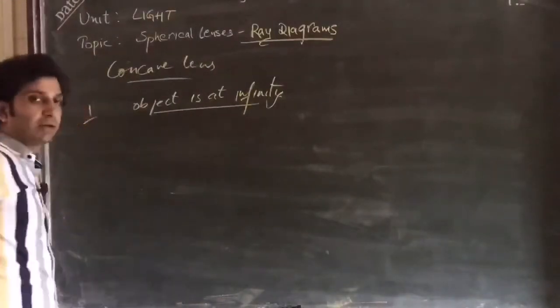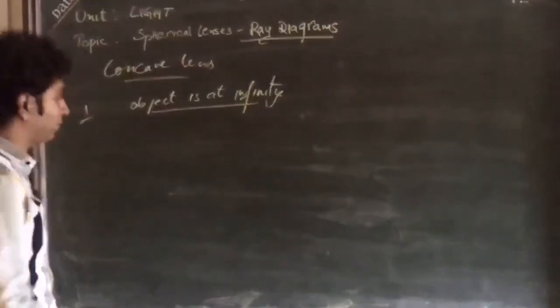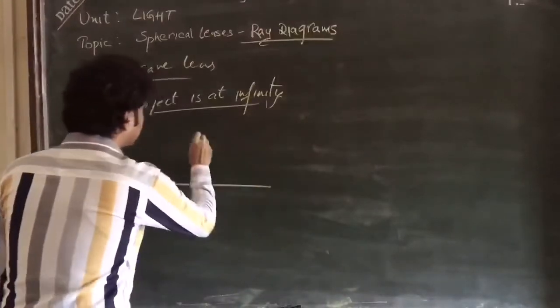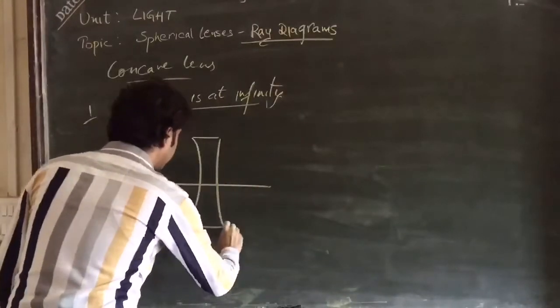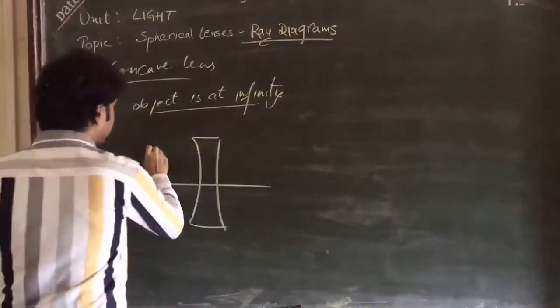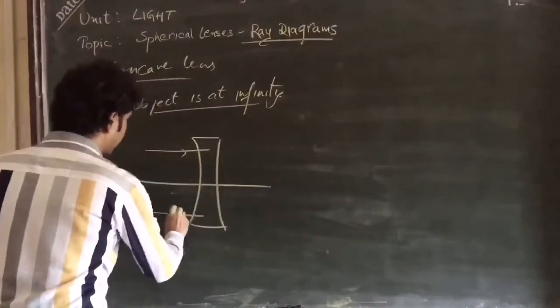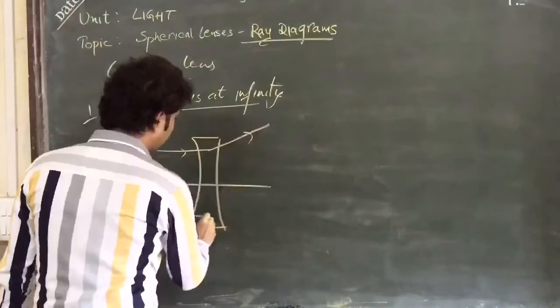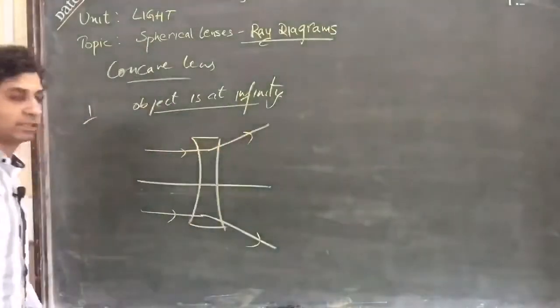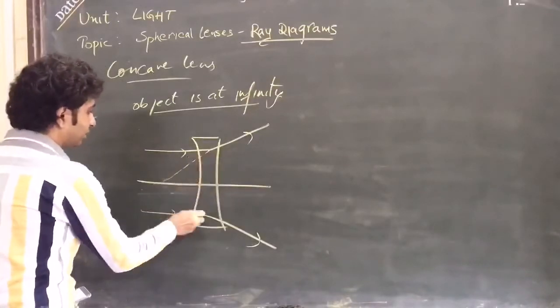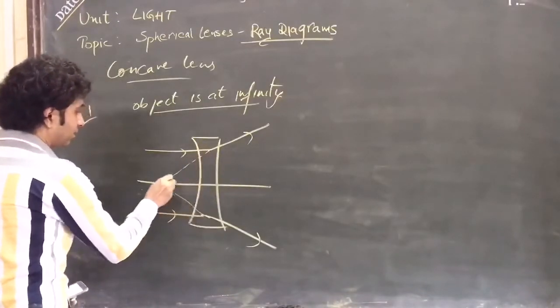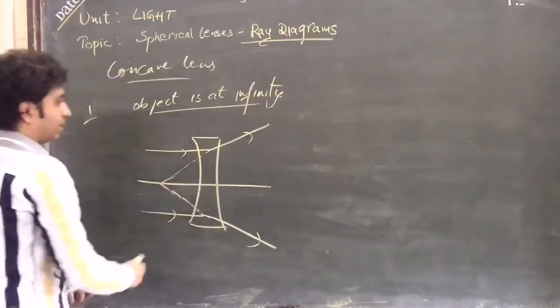First case: object placed at infinity. I'll draw a concave lens. The object is placed at infinity, so rays are coming from infinity and this will diverge. As we reproduce the rays, they will tend to meet at a single point.